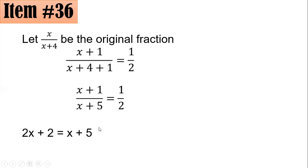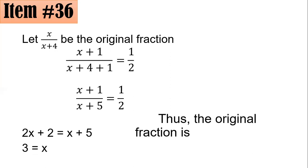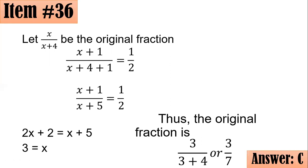Subtracting x and then 2 from both sides gives x equals 3. So the numerator is 3 and the denominator is 3 plus 4, which is 7. The original fraction is 3/7 — letter C. Checking: adding 1 to both gives 4/8 which equals one half, confirming 3/7 is correct.